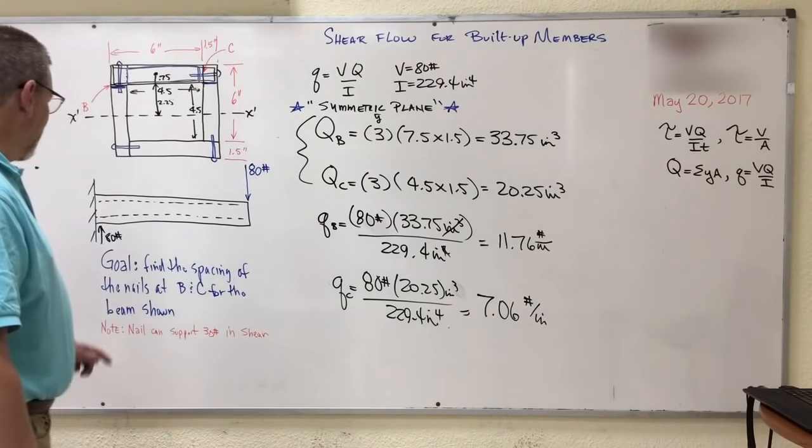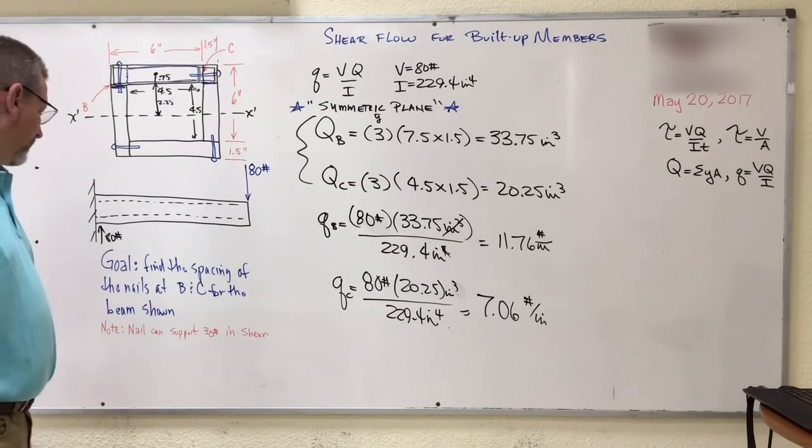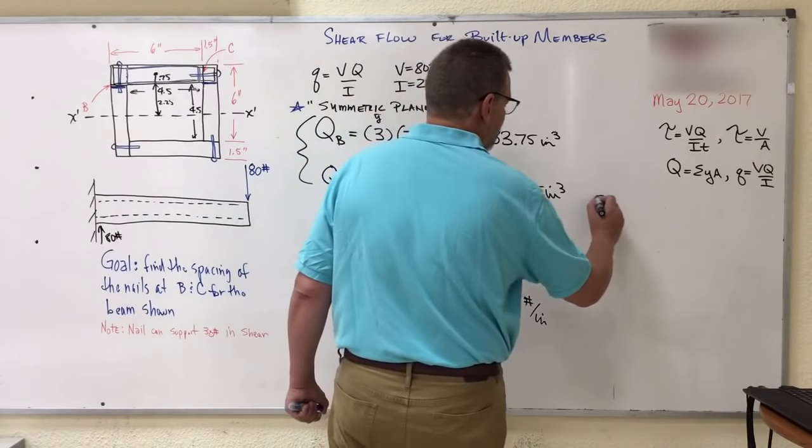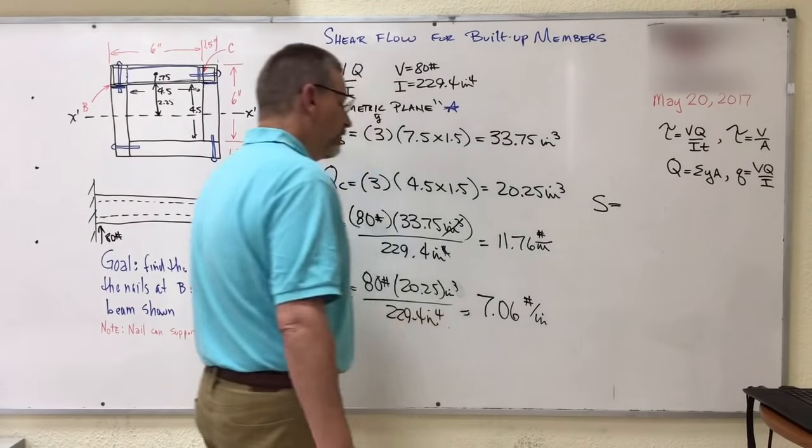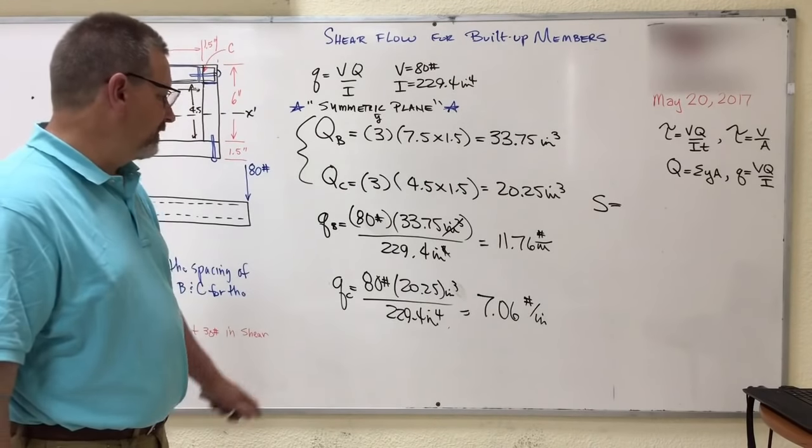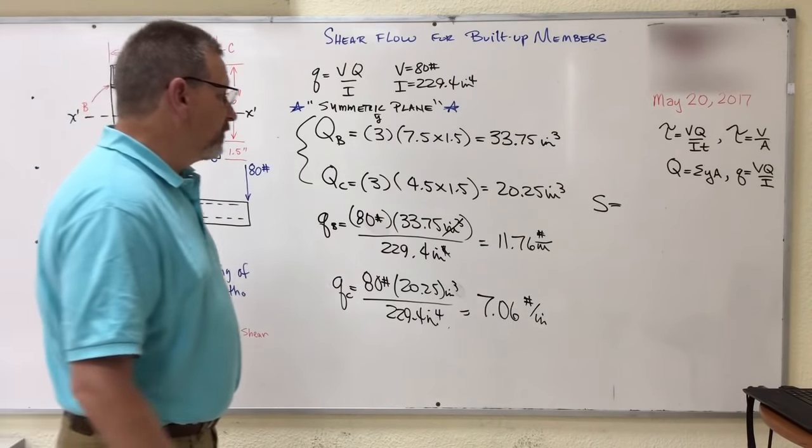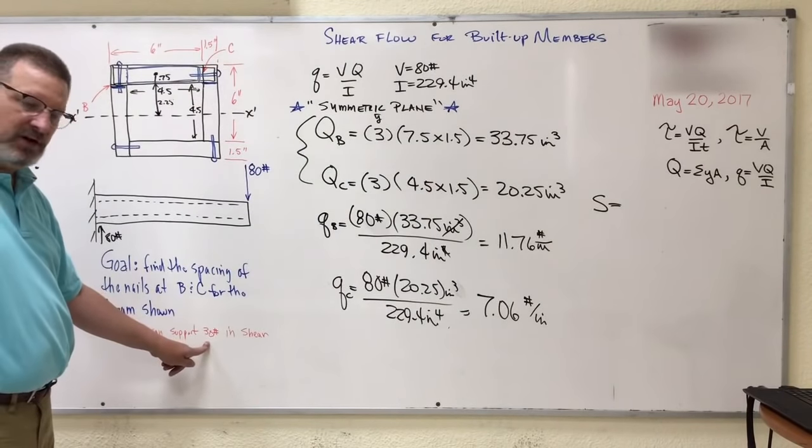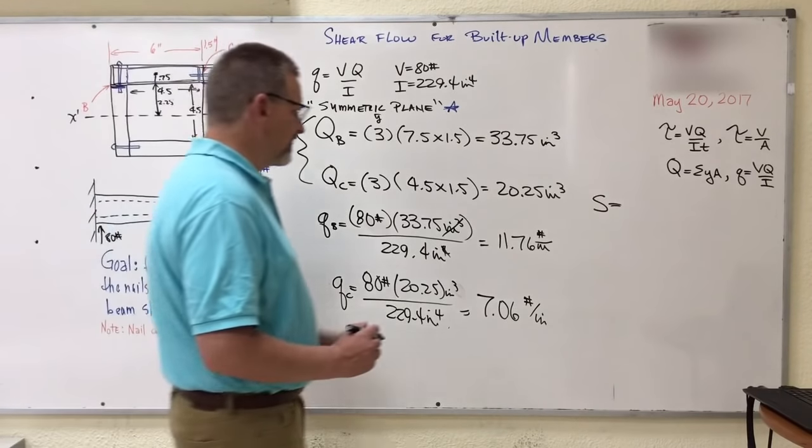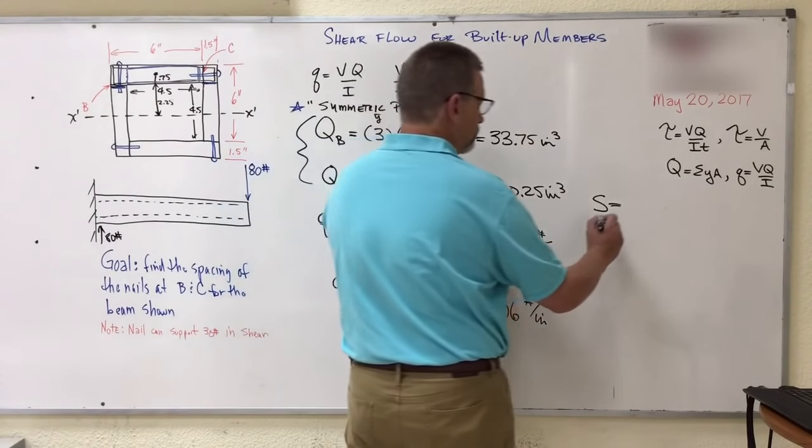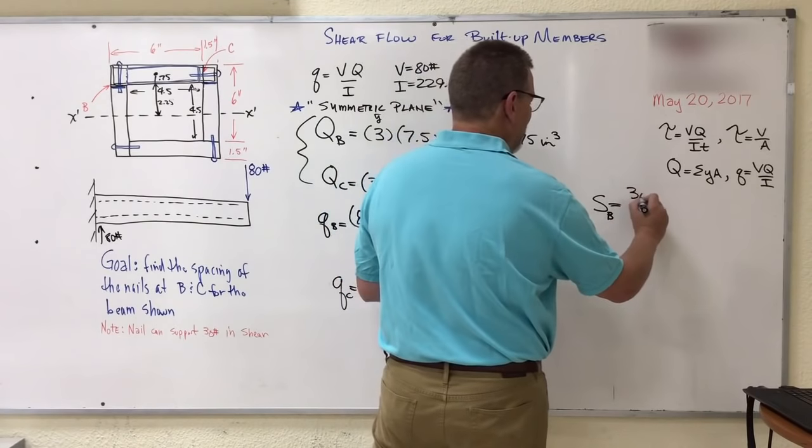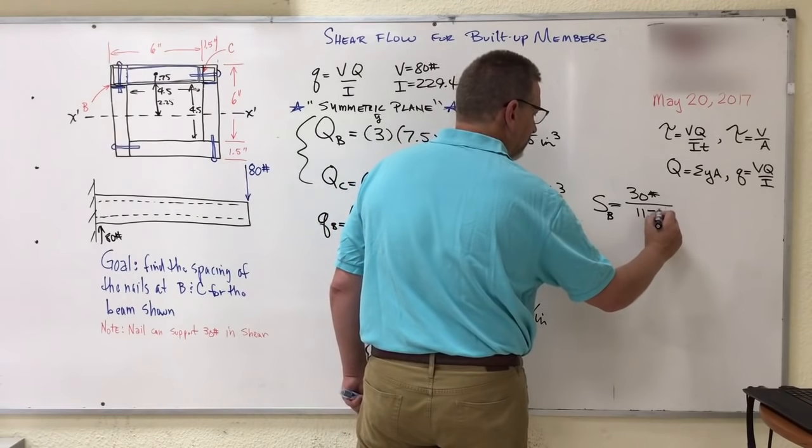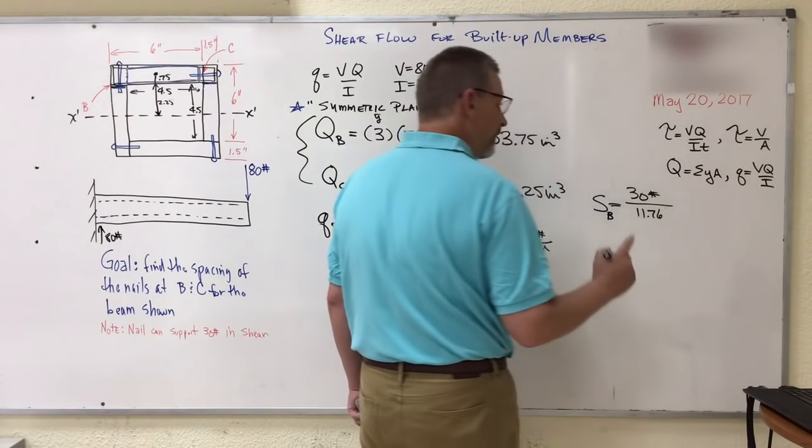But that's not what we want to know. We want to know just pure spacing. Well, the pure spacing goes like this. Spacing is equal to the force divided by this, right? So if I have the force, which was given to us down here, the nails can only support 30 pounds each. So let's see what B is going to be. Let's do spacing for B nails. That's 30 pounds divided by 11.76. But hold on.